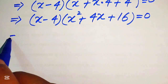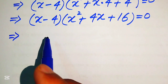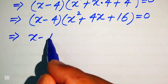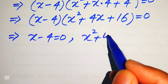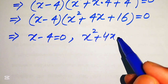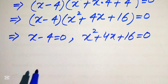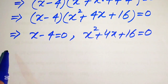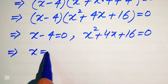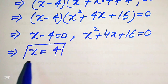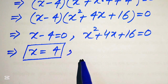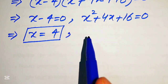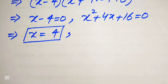In the next step we divide this equation into two cases. The first case is x minus 4 equals 0, and the second case is x squared plus 4x plus 16 equals 0. From the first case we get x equals 4, which is our first real root of the given equation. To find the other roots we need to solve this quadratic equation.